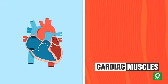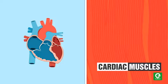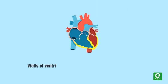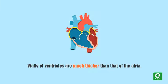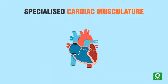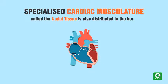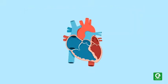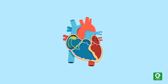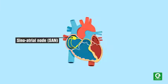The entire heart is made of cardiac muscles. The walls of the ventricles are much thicker than those of the atria. A specialized cardiac musculature called nodal tissue is also distributed in the heart. A patch of this tissue is present in the right upper corner of the right atrium, called the sinoatrial node, or SAN.